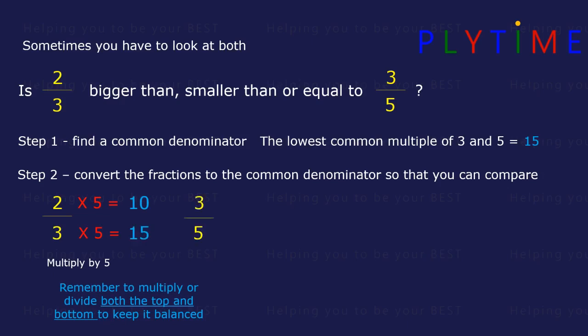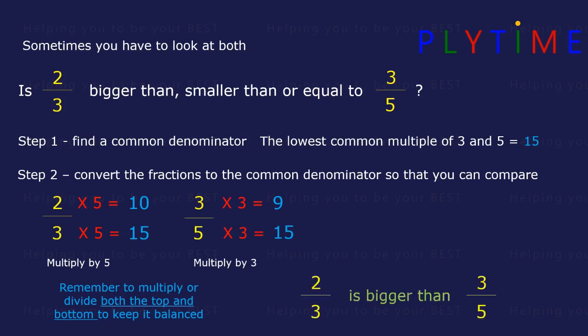What about three fifths? Here we need to multiply the top and the bottom by three. Three threes are nine and five threes are fifteen. Now we can compare them. We can see that two thirds is bigger than three fifths.